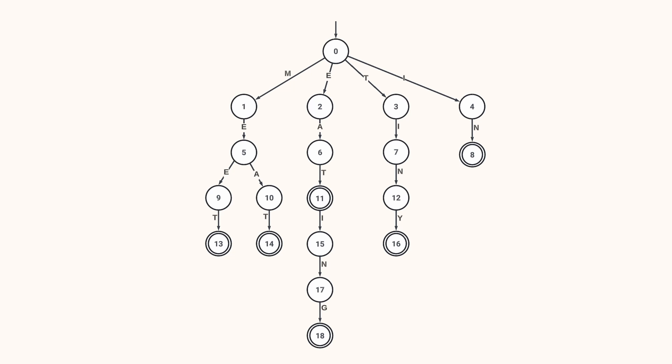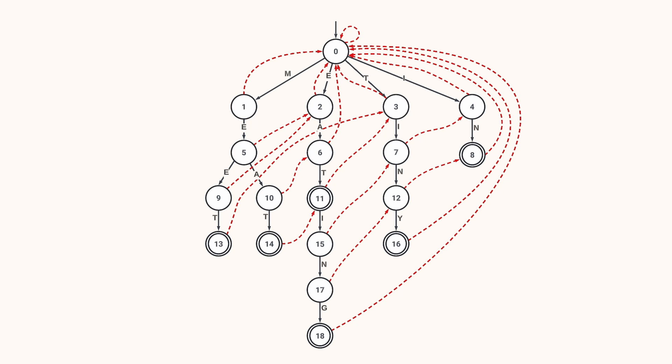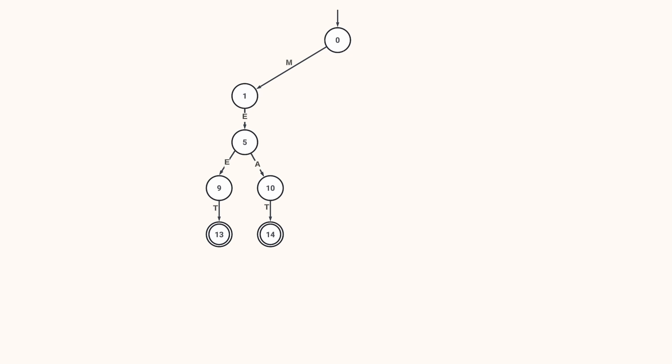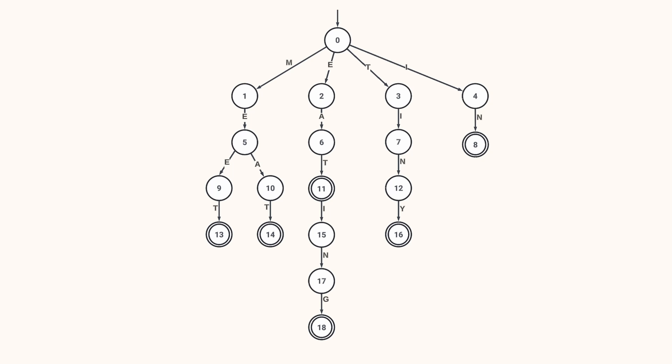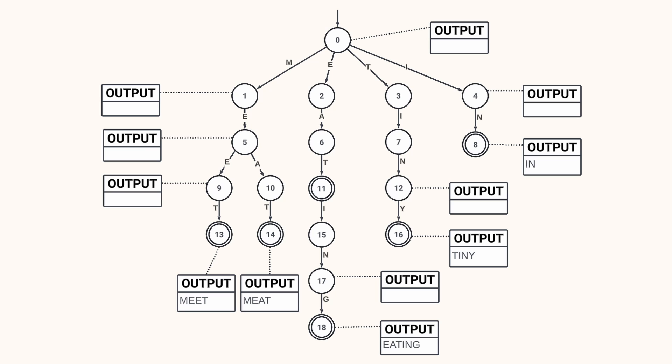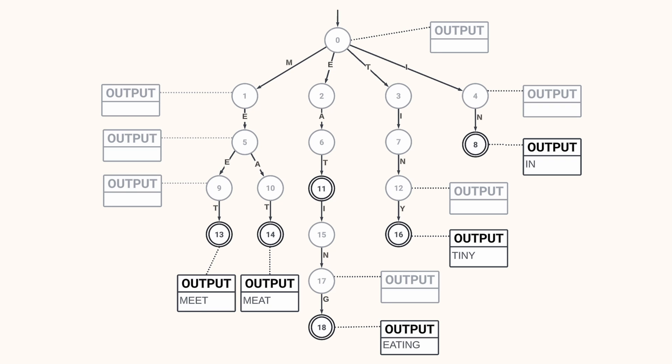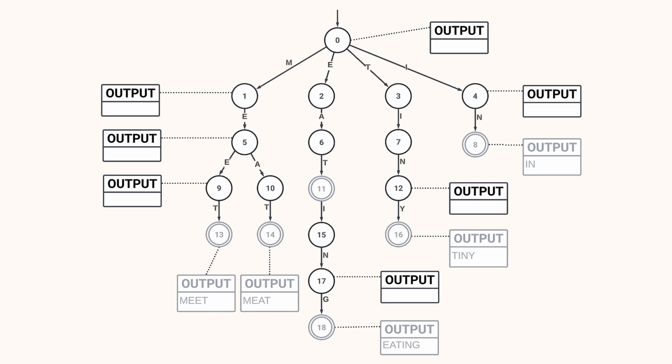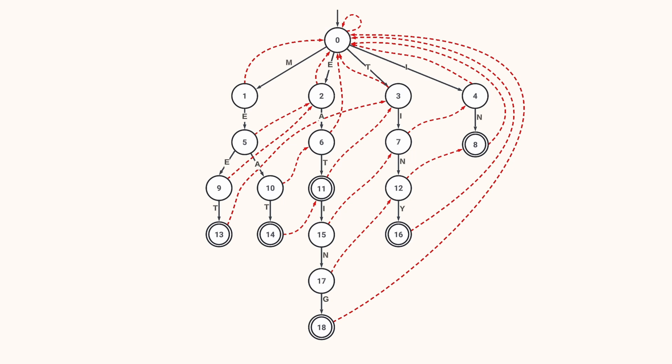Now let's learn how to build the state machine. There are two phases: first we build the trie, then the failure links. The construction of the output links happens during both phases. Building the trie is straightforward: start with an empty root node, then insert words one by one — each new letter creates a new arc and a node. Each node should have a list of output words; final states get the word they represent, all others get an empty list.